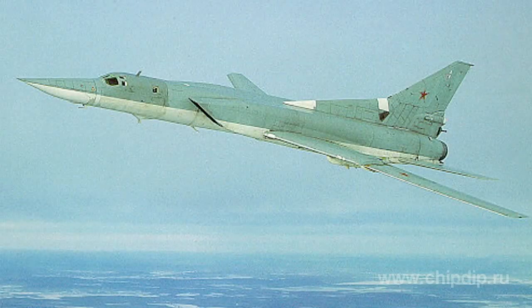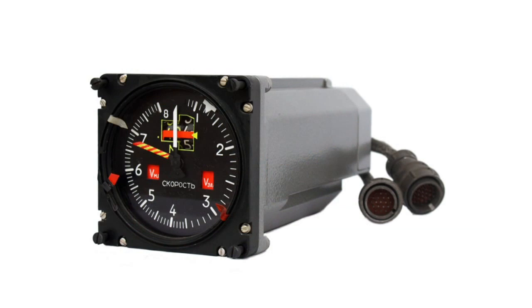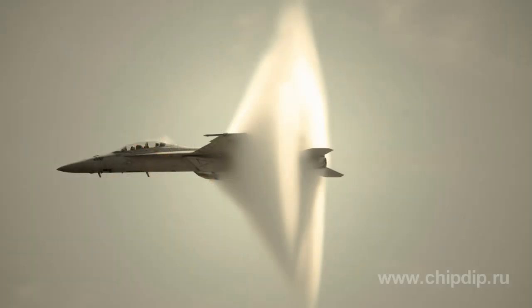Another arbitrary speed unit is the speed indicator used in aviation. Since an airplane travels in the air, it is logical that the speed unit here would be the speed of sound in the air. This measurement unit is referred to as M, or Mach number. If an object travels at a speed that exceeds the speed of sound by 1.2 times, they say that the object's speed is Mach 1.2.